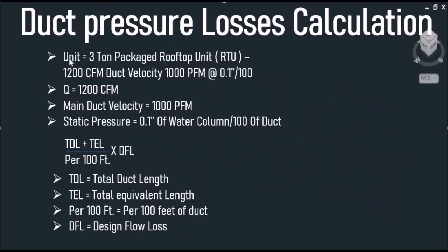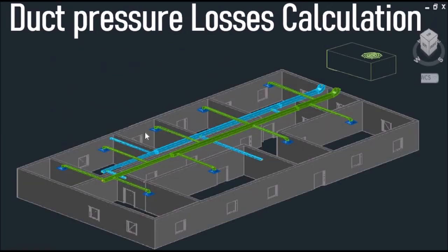For this example we are going to be using a 3-ton package rooftop unit, which is equivalent to 1200 CFM with a velocity of 1000 FPM for our main duct at a static pressure of 0.1 inch of water column. To calculate the pressure losses we will use the formula: (TDL + TEL) / 100 × DFL, where TDL is total duct length, TEL is total equivalent length, 100 is per 100 feet of ductwork, and DFL is design flow loss.